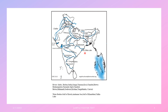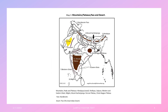The other water bodies to mark are: Chilka Lake and Andaman Sea on the eastern part of India, and Gulf of Khambat and Gulf of Kutch on the western part of India. Next we look at Mountains, Plateaus, Passes, and Deserts.